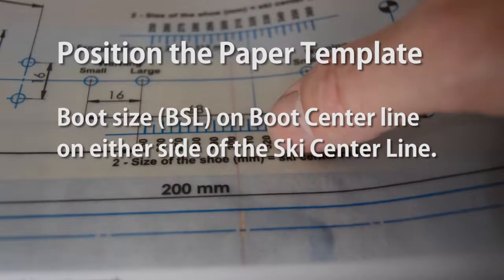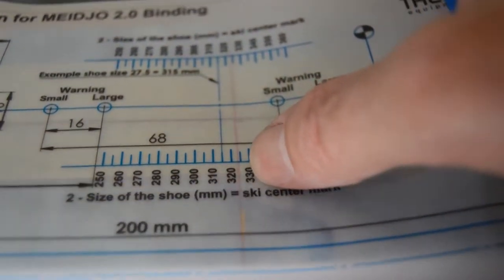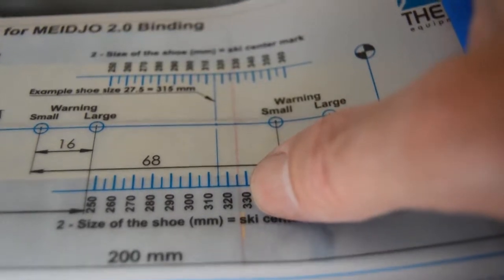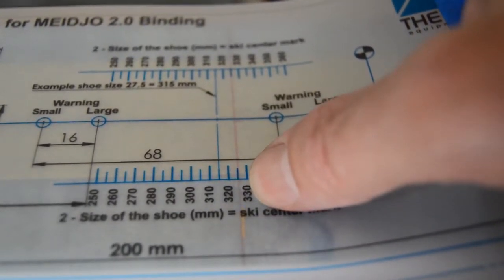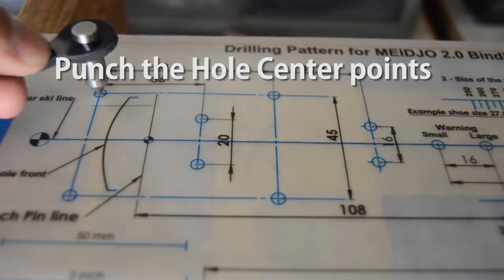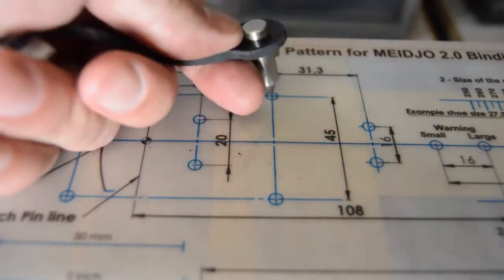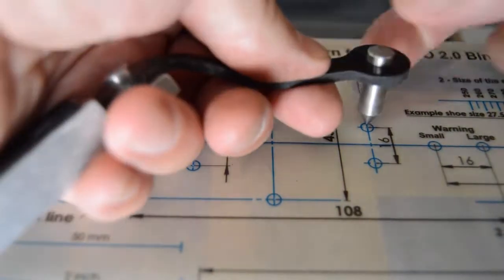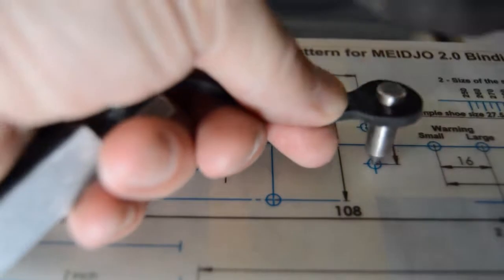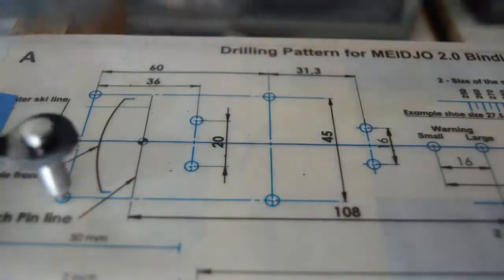Okay, now we can take the Meizhou template, line it up with a ski center line, and then across the boot center line, you want to put the marks for the boot sole length of your boot, whatever that is. And then go around, tape it in place, of course, make sure it doesn't wiggle, and then center punch the holes for the toe and the shift bumper. And then we are ready for the moment of truth, drilling the holes.